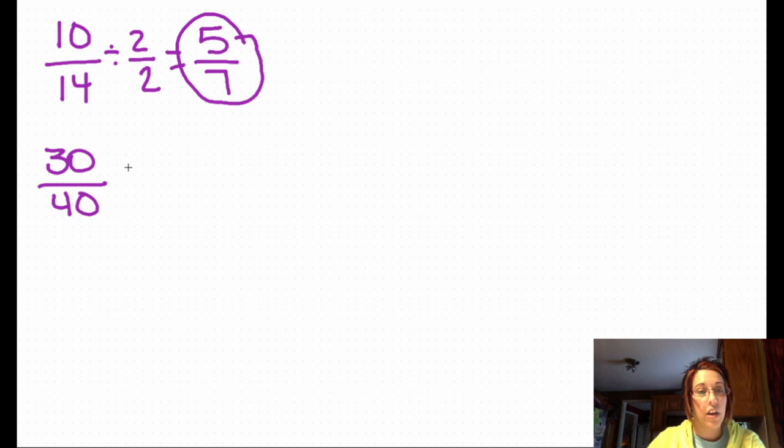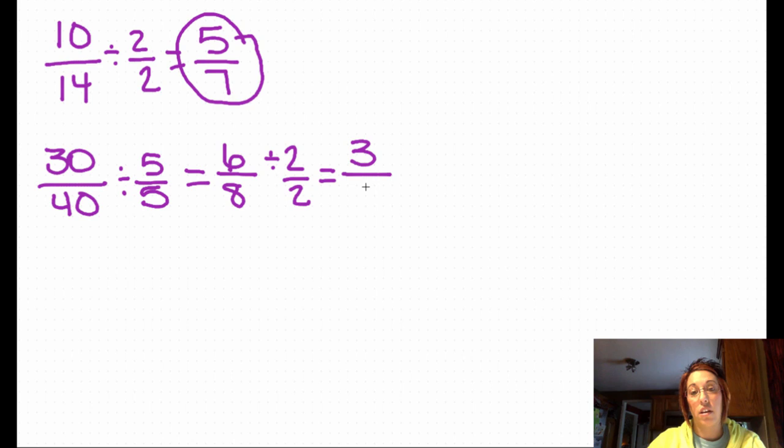Let's look at 30/40. I know 5 is a factor, so I'm going to try dividing by 5/5. 30 divided by 5 is 6. 40 divided by 5 is 8. I can still go down. 6 divided by 2 is 3. 8 divided by 2 is 4. So 3/4.